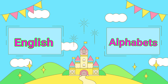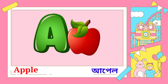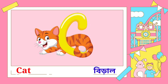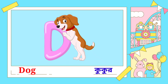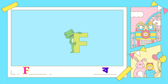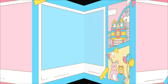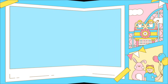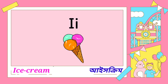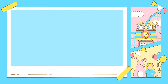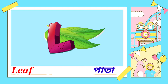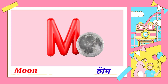English Alphabets. Turkish Alphabets. L for Lip, leaf — leaf means pata. M for moon — moon means chat.